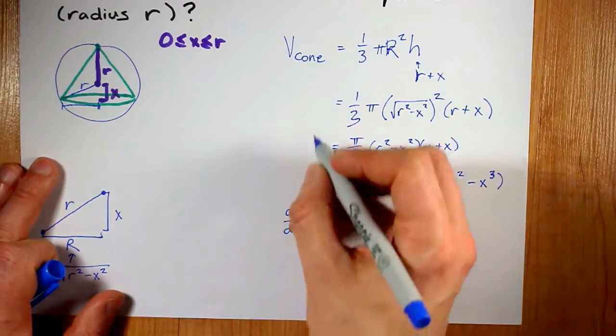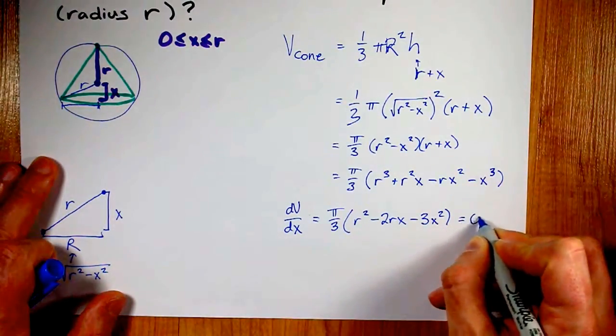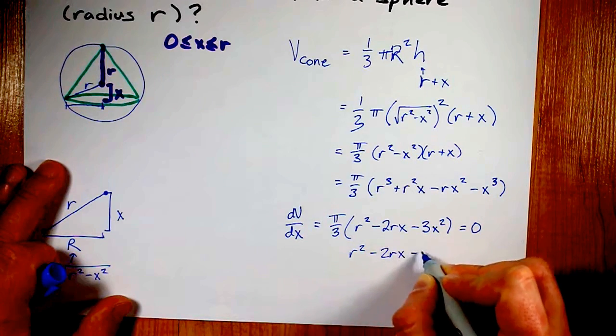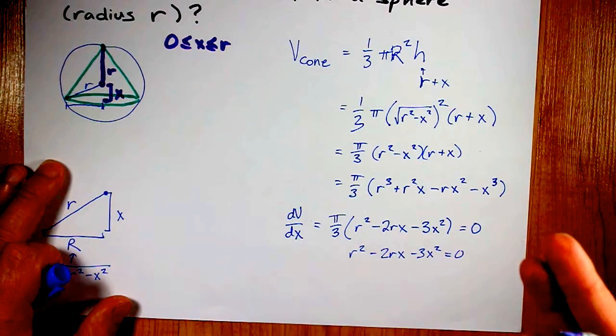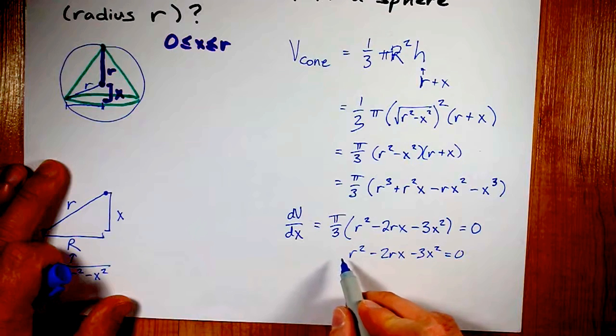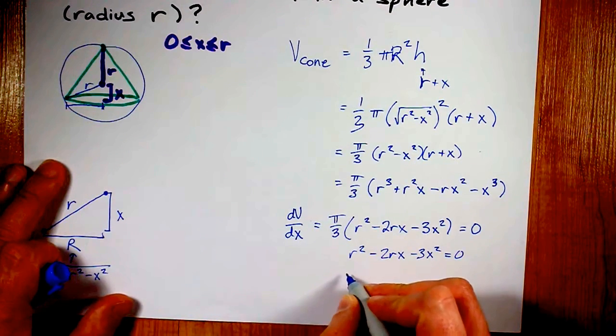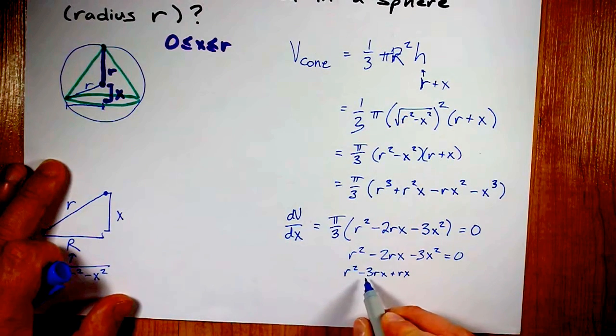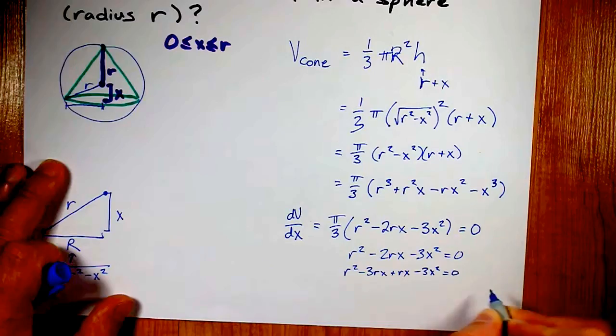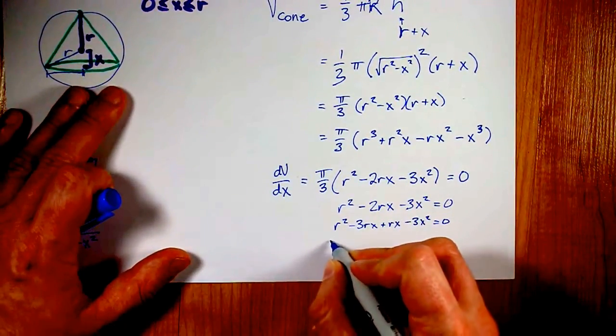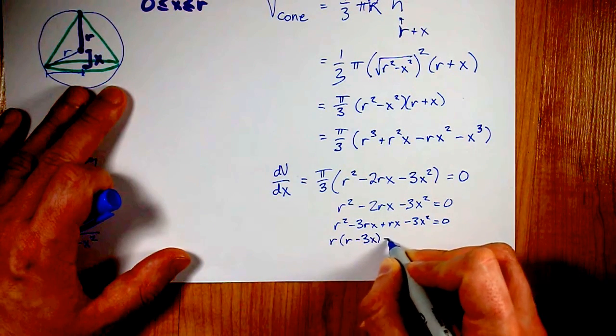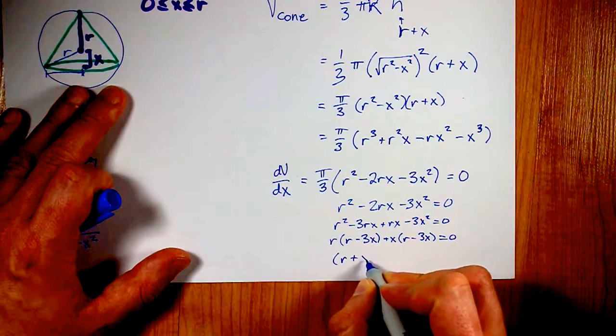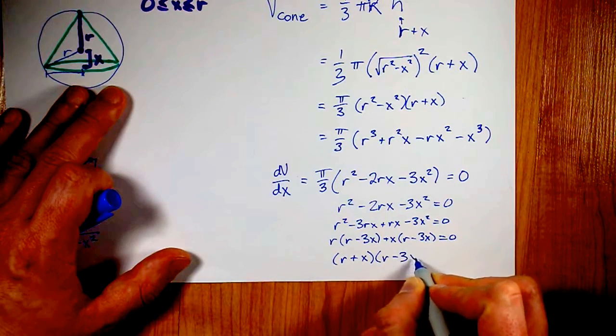The idea here is that to optimize or maximize the volume of the cone, I need to set the derivative equal to 0. The pi over 3 does not affect that. So, really, I'm setting r squared minus 2rx minus 3x squared equal to 0. I believe I could factor this with decomposition. I'm looking for two numbers that multiply to negative 3 and add to negative 2. That's negative 3 and positive 1. I'm breaking my middle term, negative 2rx into minus 3rx and plus 1rx. And, again, this is just going to be the motions of factoring. I'm going to factor a common r out of that. That's r minus 3x. Factor an x out of this. That's r minus 3x. My brackets match. And so this factors to r plus x times r minus 3x equals 0.